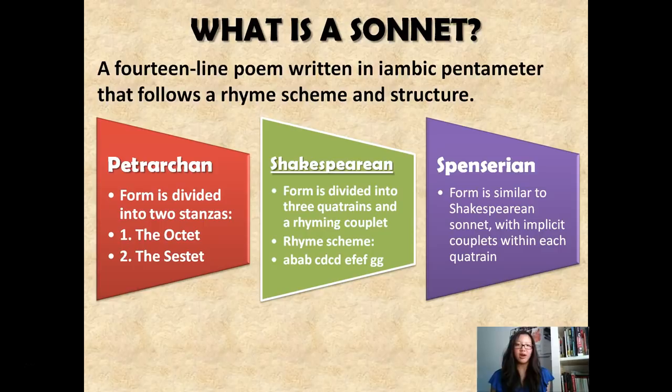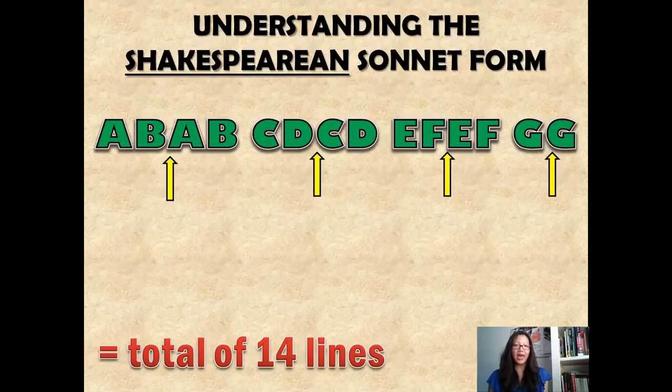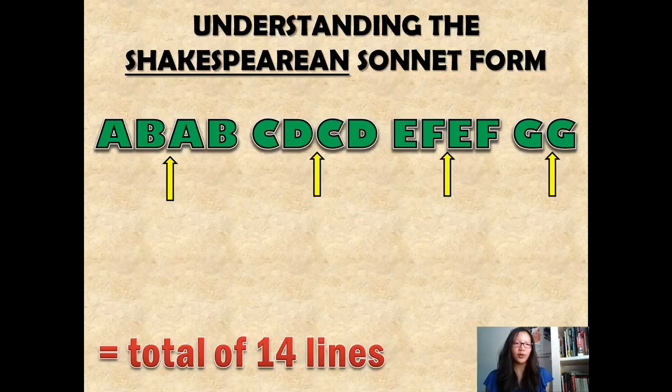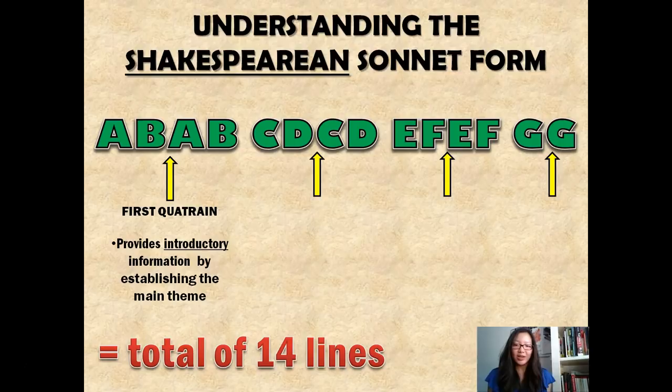We have to look at the sonnet form and understand exactly what each quatrain means in arriving at its conclusion. Take a look at the first quatrain, which follows the rhyme scheme ABAB. In this quatrain, it provides introductory information — you get some information about the conflict, the characters, and the setting, which gives you a hint about the main theme that is going to be established throughout the sonnet.